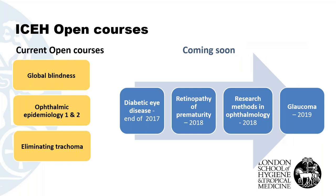We currently have four courses available: the Global Blindness course, basic and slightly more advanced courses in ophthalmic epidemiology, and a course on eliminating trachoma. At the end of the presentation we'll share the link so you can access and register for these if you're interested. Four more courses are coming up over the next couple of years: diabetic eye disease, we hope, by the end of this year, along with retinopathy of prematurity, research methods in ophthalmology, and glaucoma by the end of 2019.